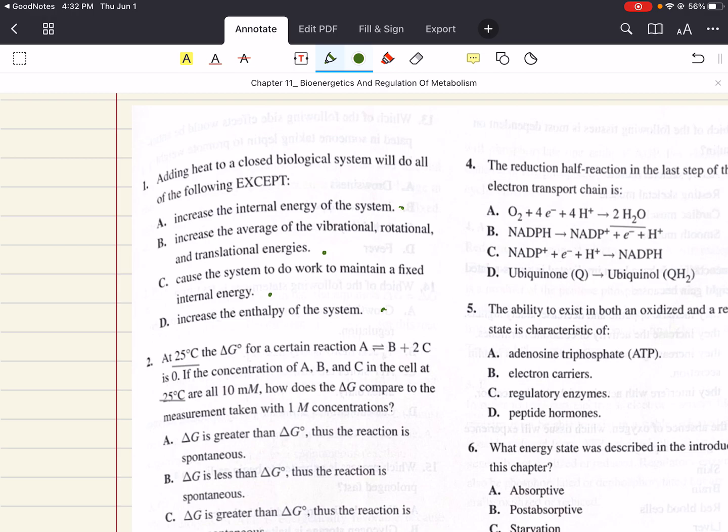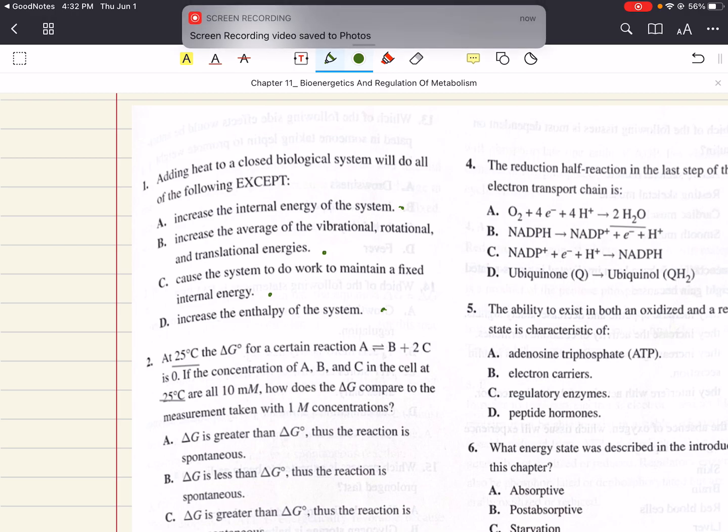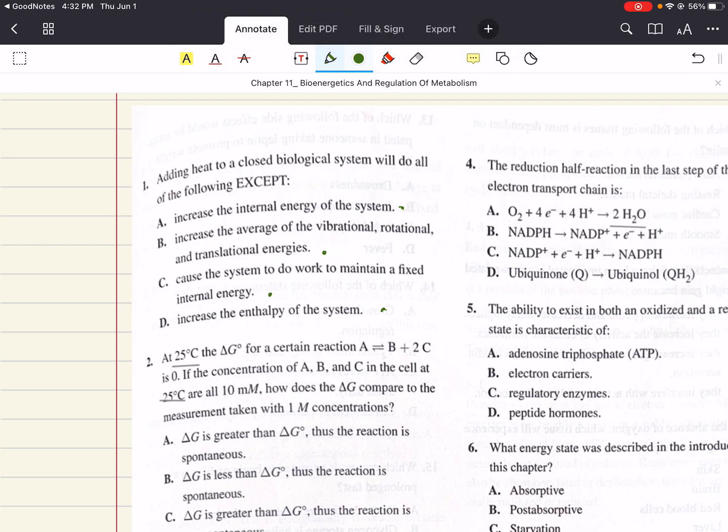In a closed biological system, enthalpy, heat, and internal energy are all directly related because there's no change in pressure or volume. And because pressure and volume are fixed, work cannot be done. Adding heat to a closed biological system will increase the internal energy of the system, the average of the vibrational, rotational, and translation energies, and the enthalpy. But what it will not do is cause the system to do work. So 1 is going to be C.